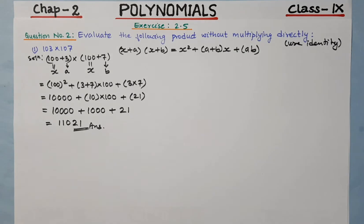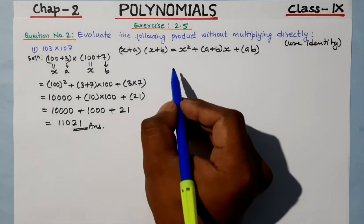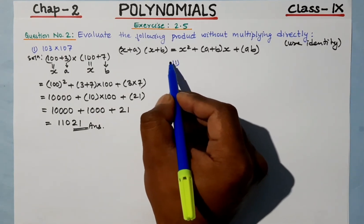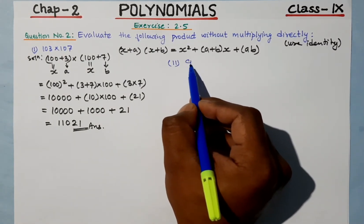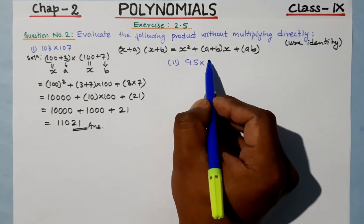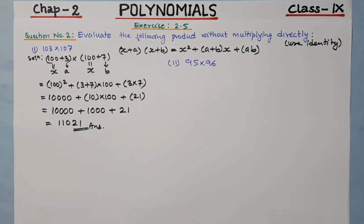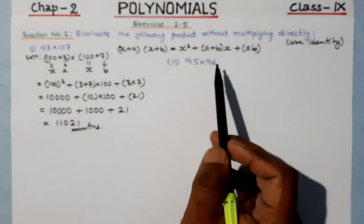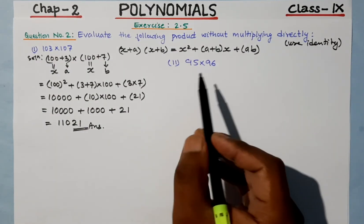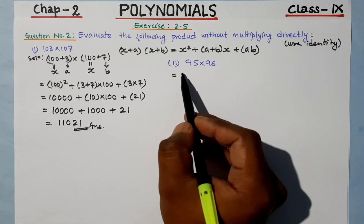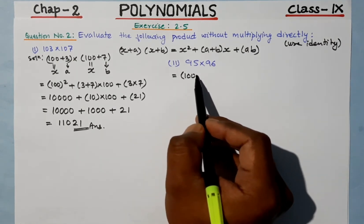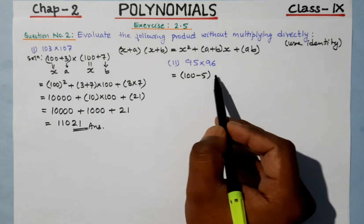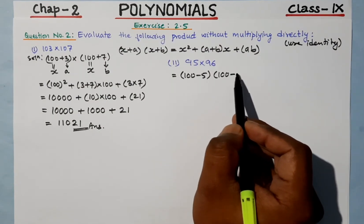That completes question number one. Now for question number two: 97.5 into 96. We can rewrite this as (100 − 5) and (100 − 4).